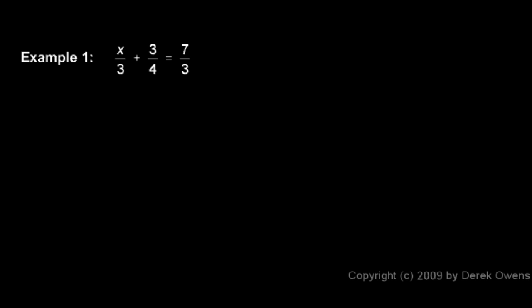Here's example one, and obviously this is a fractional equation. You see the fractions there: 3/4 and 7/3, and this first term x/3, that's also a fraction. The technique for getting rid of the fractions is pretty simple. You start by looking at all the denominators—I see a 3, a 4, and a 3—and you ask yourself, what is the least common denominator? What is the LCD? The least common denominator in this case will be 12. 12 is a multiple of 3 and 4 and 3.